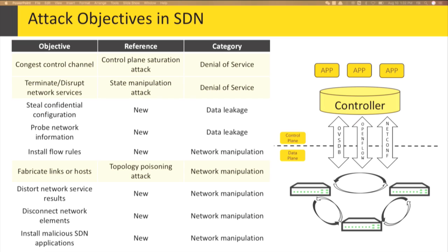In this table, some objectives have been achieved by previous researchers and some have not. We discovered that existing attacks — for example, topology poisoning attacks — all focus on the service logic of the controller. These attacks, like the topology attack, attack the topology discovery service in the controller to report false links and let the controller make wrong decisions. To discover these vulnerabilities, you should be both a hacker and an SDN expert — you should know the details of the SDN protocol interactions and the relationships among service logic.